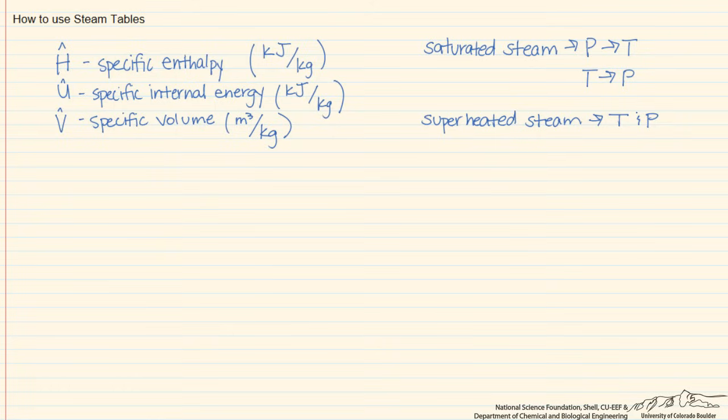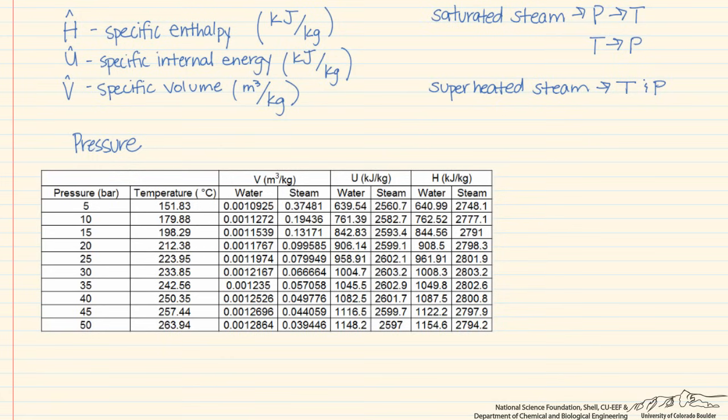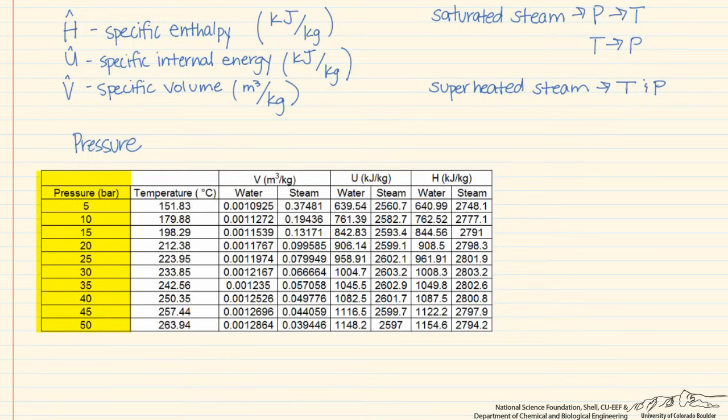So let's start with saturated steam. We can look at two different tables, but let's look at the first one, which lists the properties by pressure. Note we have in this column the different pressures in bar. In this column we have temperatures that correspond to these pressures. Again, because this is saturated, once you have the pressure, you know the temperature.